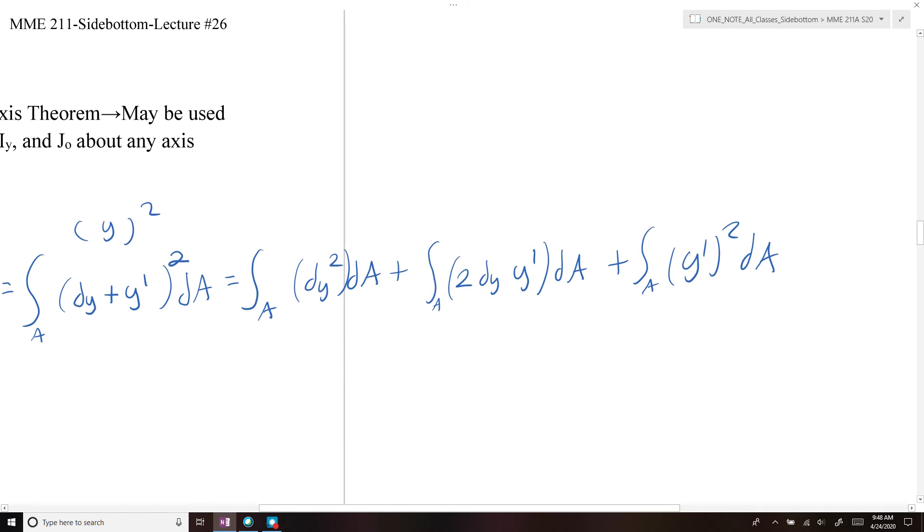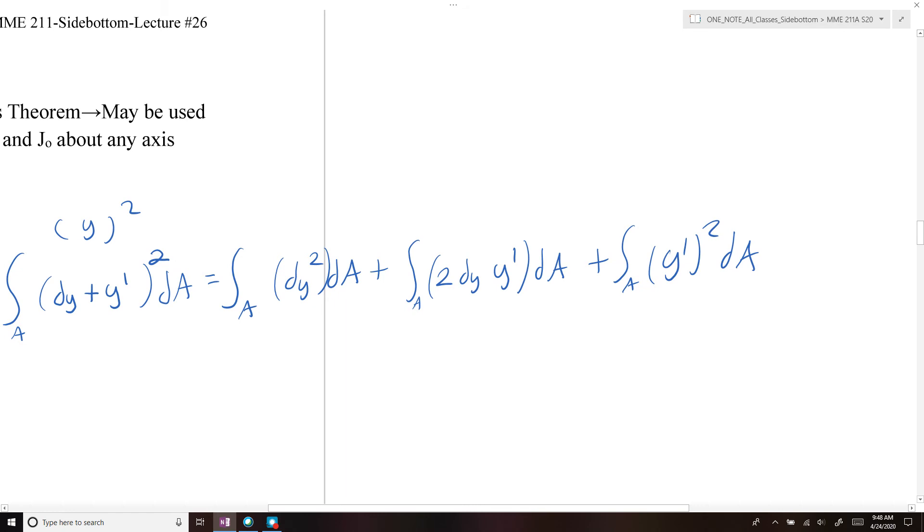So if we look at these integrals, one thing we'll notice is this term here, since dy is a constant, but y-prime for the centroid, there's an equal amount of area above and below our centroid. So y-prime dA, if we integrate across the whole area, the positive area and the negative area would cancel each other out. So we could simplify this and say this is equal to 0.